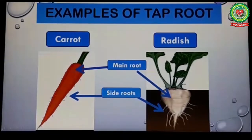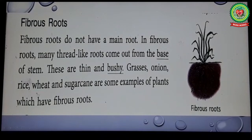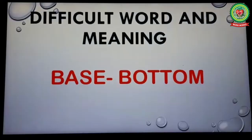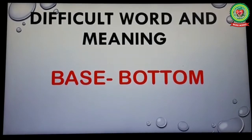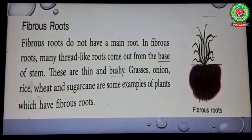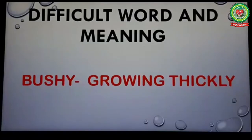Now next paragraph — fibrous roots. Fibrous roots do not have a main root. In fibrous roots, many thread-like roots come out from the base of the stem. Underline the word 'base' and write its meaning: bottom. These are thin and bushy. Underline the word 'bushy' and write its meaning: growing thickly.